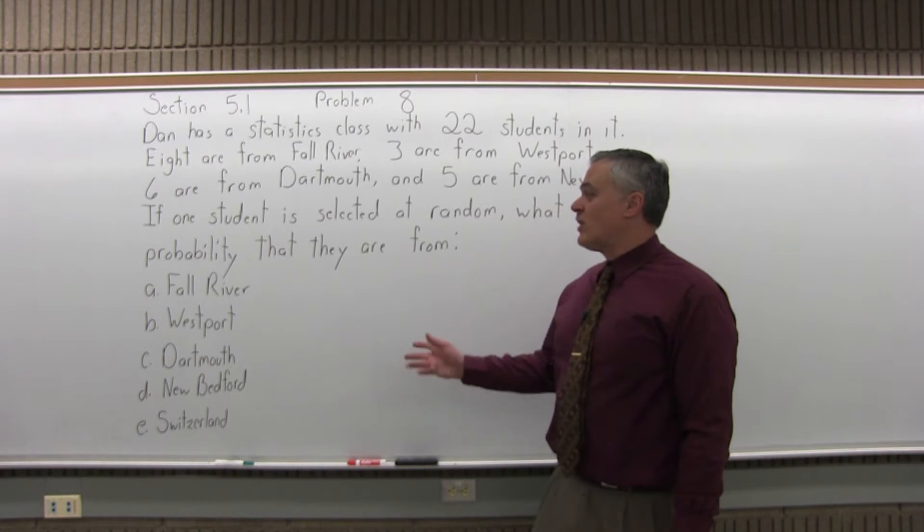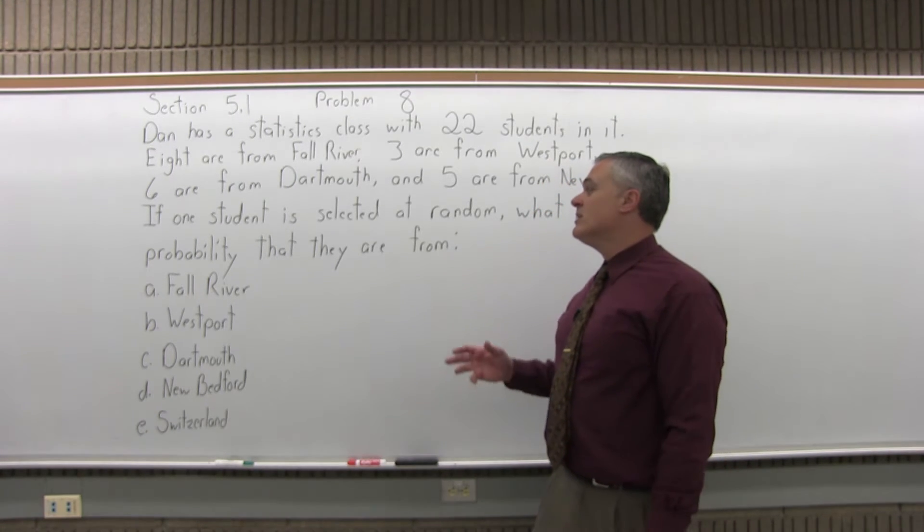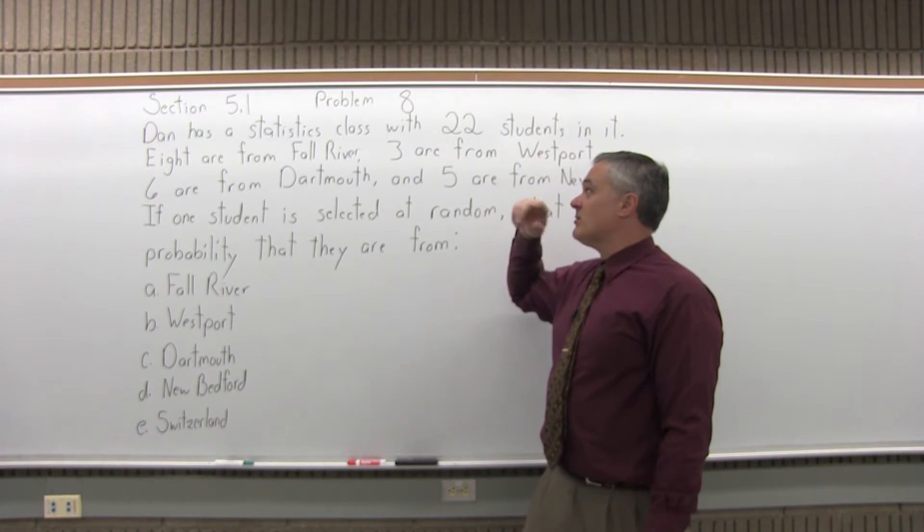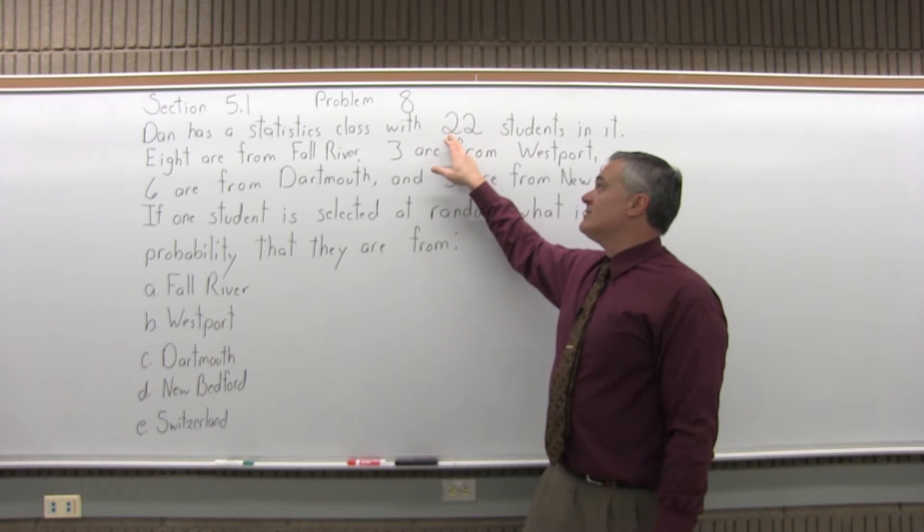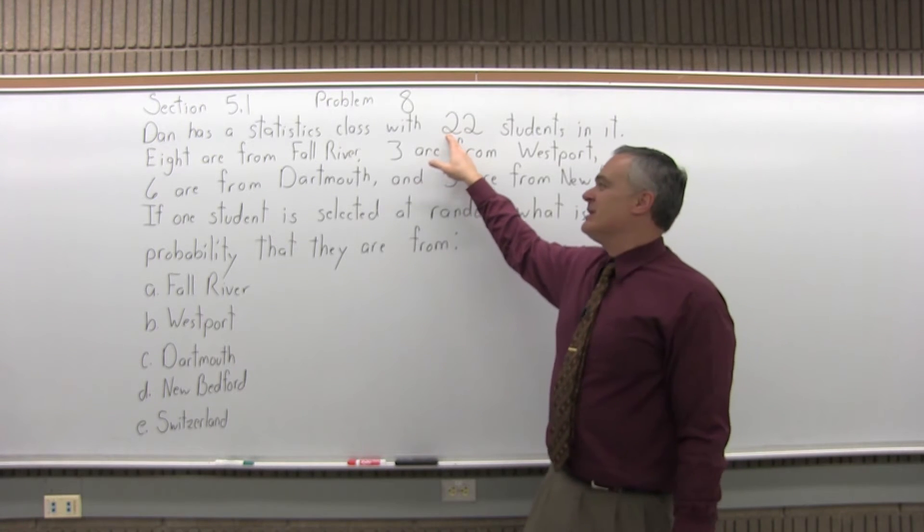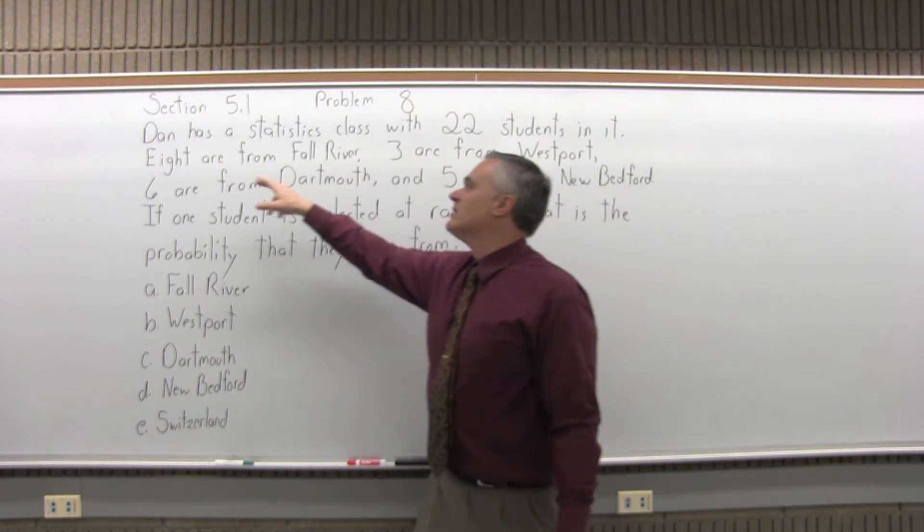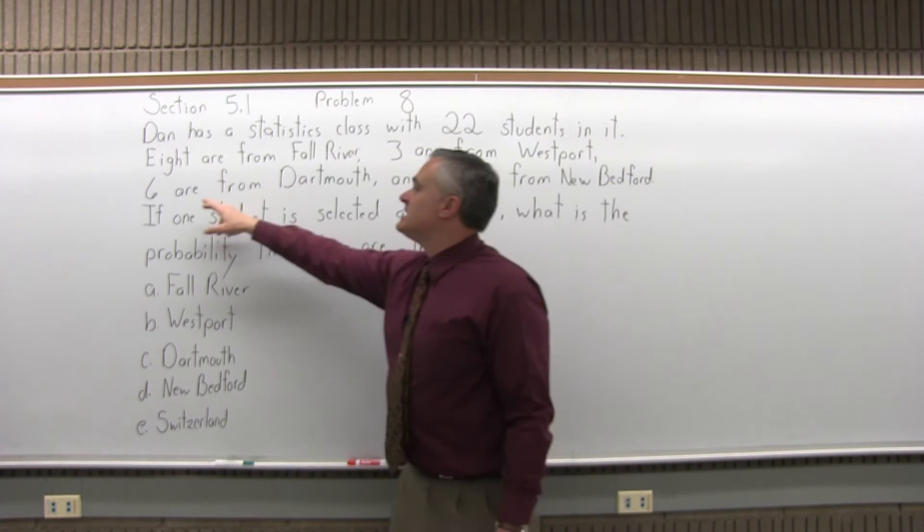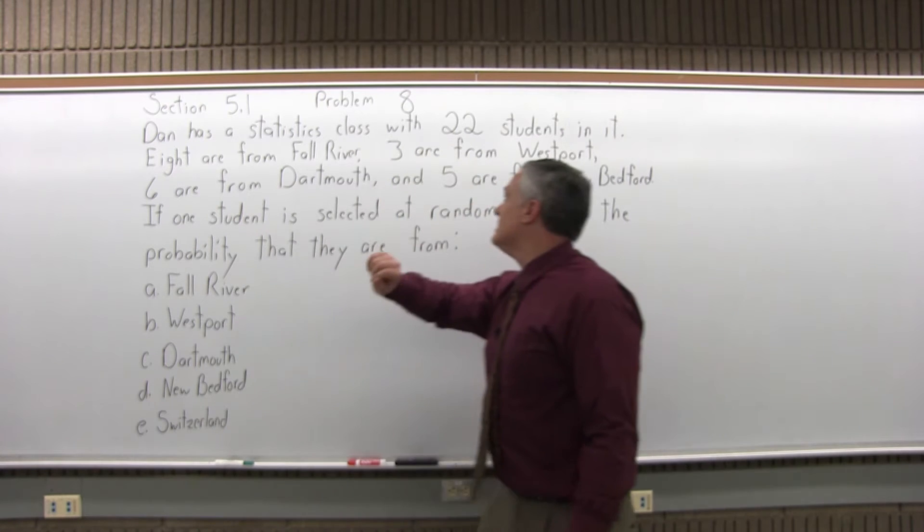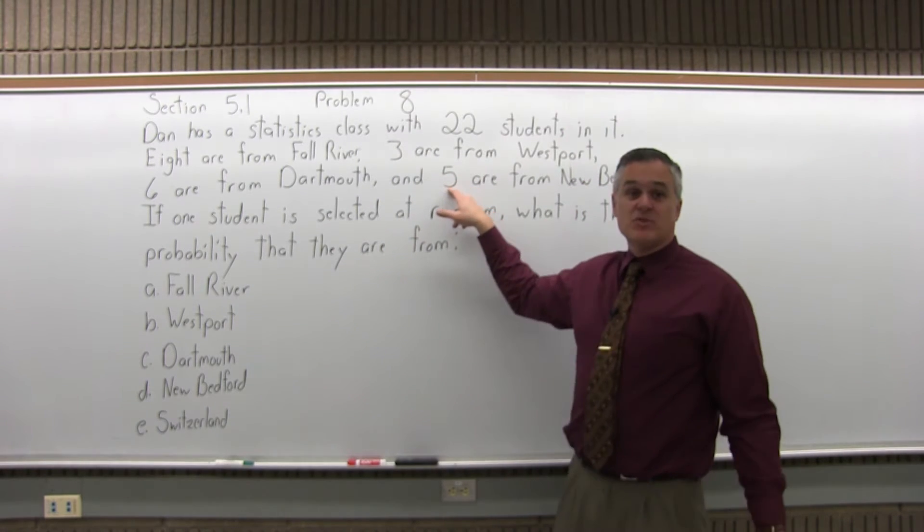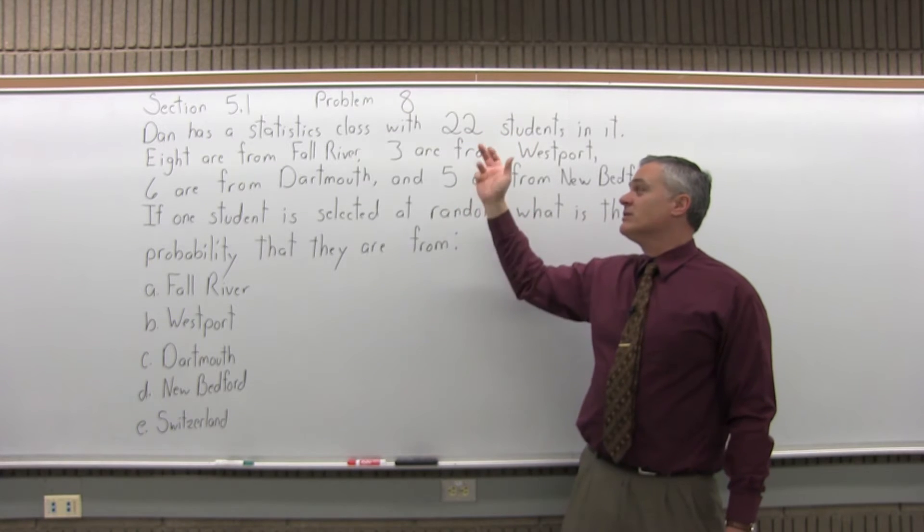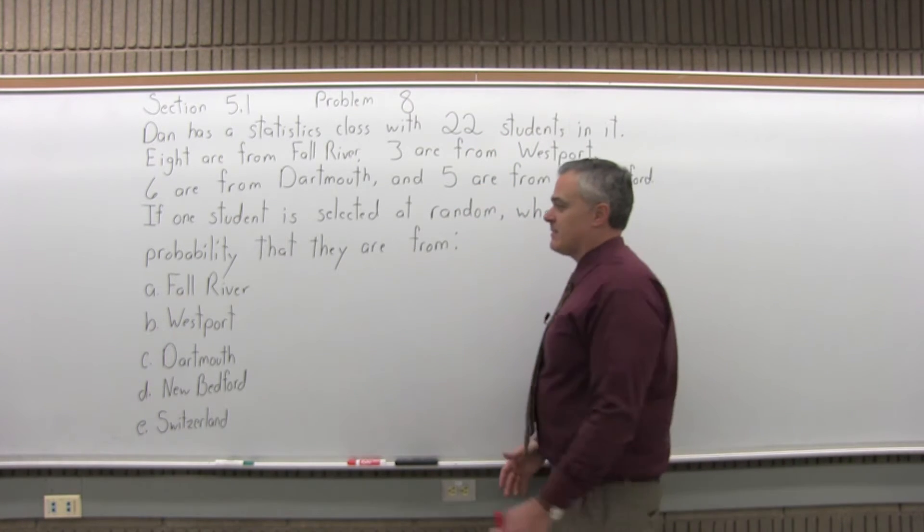It starts with Fall River. So ordinarily, with a question like this, we count how many from each town, add them together, and find the total. But if you're paying attention, the total is already given at 22. If you miss that, you get it pretty quick. Eight and three is 11, 11 and six would be 17, 17 and five adds up to 22. So if you don't notice that it's given, it's not the end of the world. But if you notice, it's a little bit better. Pay attention.